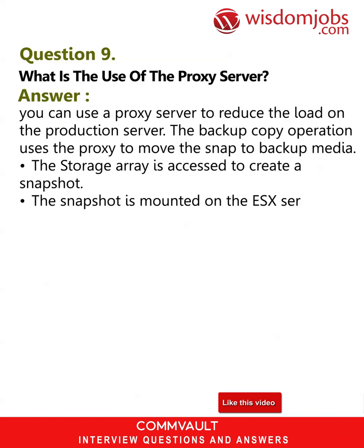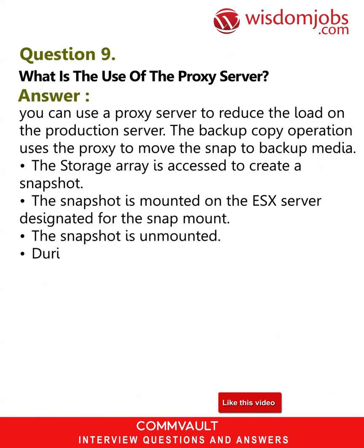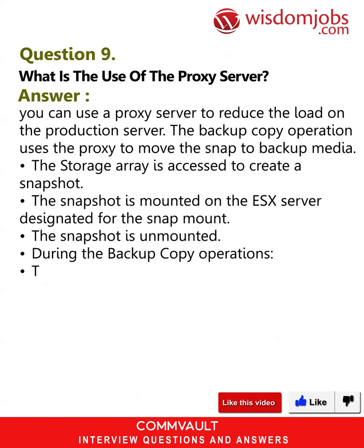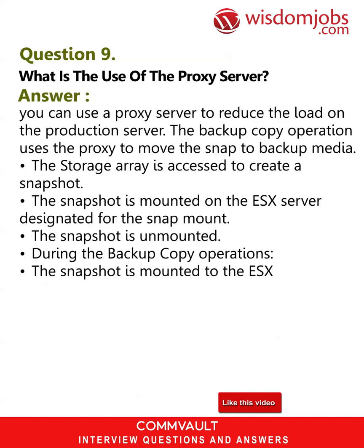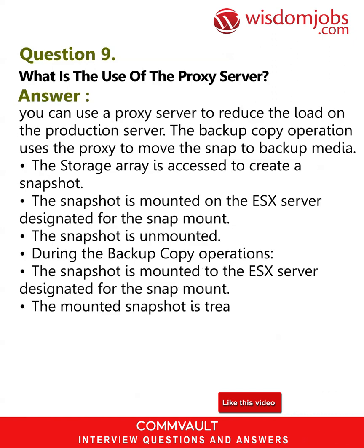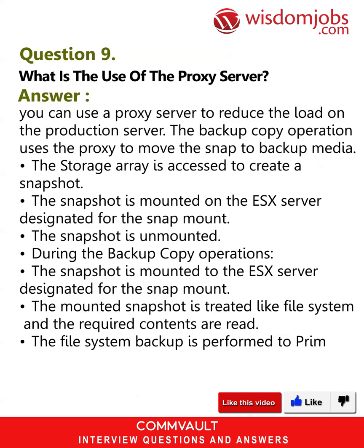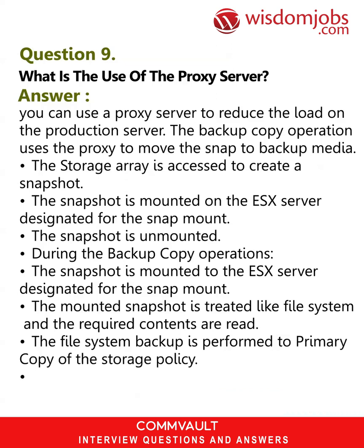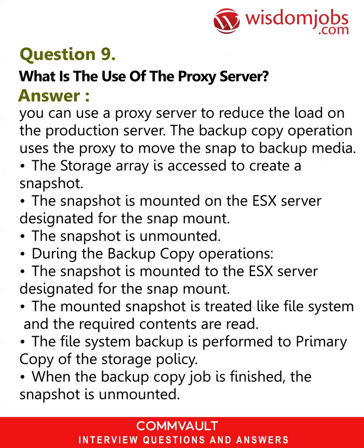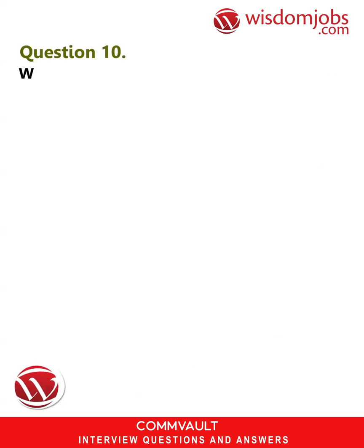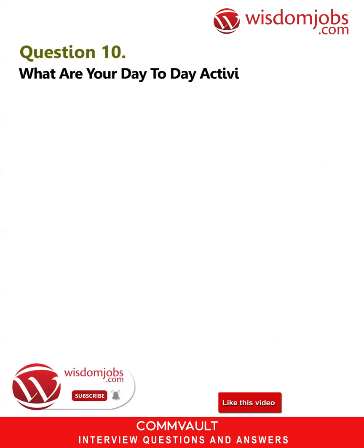The snapshot is mounted on the ESX server designated for the snap mount. The snapshot is unmounted during the backup copy operations, then remounted to the ESX server designated for the snap mount. The mounted snapshot is treated like a file system and the required contents are read. The file system backup is performed to the primary copy of the storage policy. When the backup copy job is finished, the snapshot is unmounted.